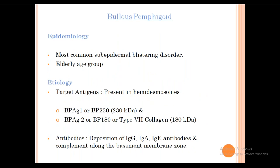Sub-epidermal blisters: how to differentiate? Epidermal blisters are flaccid while sub-epidermal blisters are tense. Sub-epidermal blistering disorders are generally more common in the elderly. Target antigens are non-desmoglein: BP Antigen 1 (BP230), BP Antigen 2 (BP180/Collagen 17), or Type 7 collagen. Antibodies deposited include IgG, IgA, IgE, and complement along the basement membrane zone (not inside the epidermis as in Pemphigus).